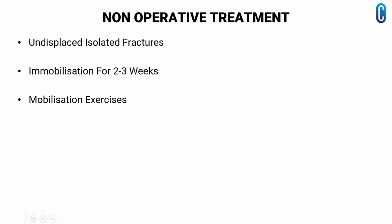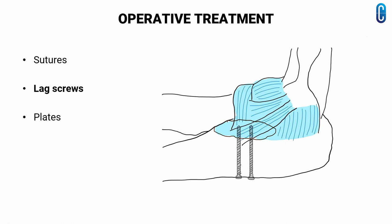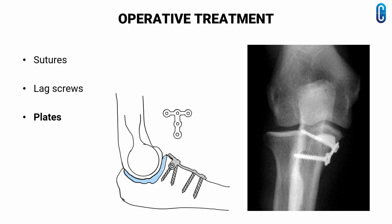Considering the treatment of coronoid fracture, one should consider the pattern and associated injury rather than treating an isolated coronoid fracture. Undisplaced isolated fractures can be treated by immobilization for 2 to 3 weeks and mild mobilization exercises. Displaced fractures of the coronoid can be treated by sutures if the avulsed piece is small. Lag screws can be used if a chunk of repairable piece is present. Coronoid plates are also available, but always address the associated fractures and other injuries.